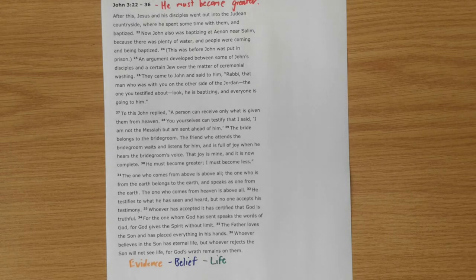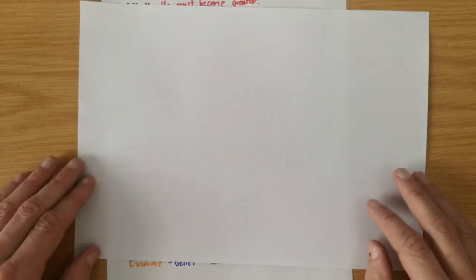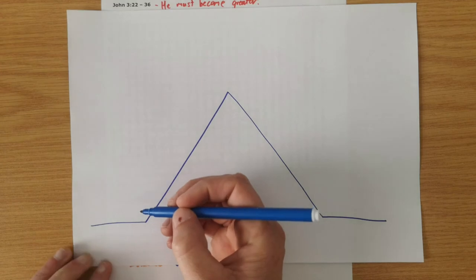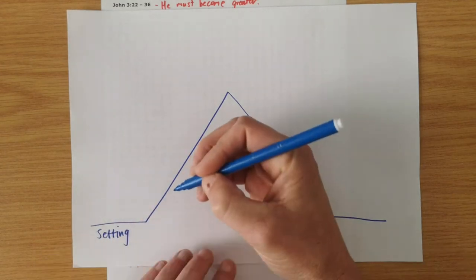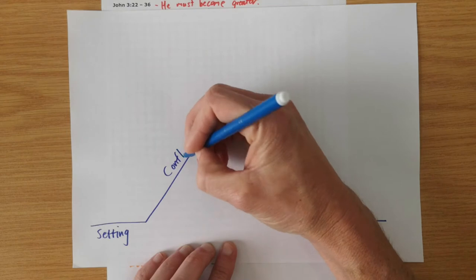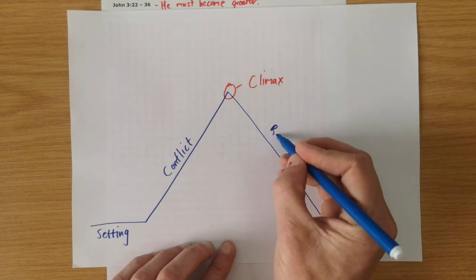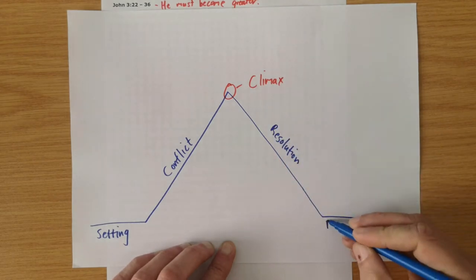And the main tool I used to see the structure is what is called the narrative plot arc tool. So I'll just show you how I worked that out in this section. In the structure, we're looking for the setting, the conflict, the climax, the resolution, and then the new setting.